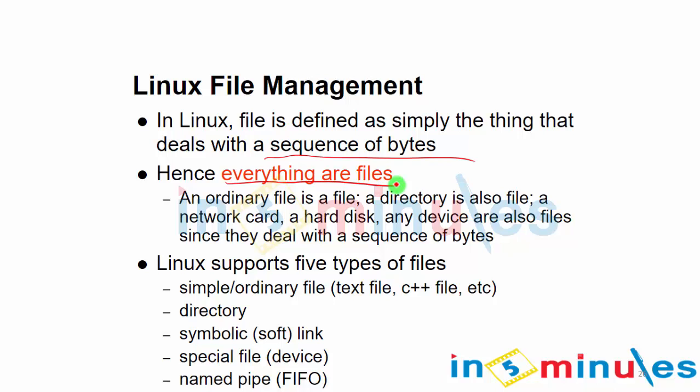The five file types are: simple or ordinary files, which are text or script files; directories, which contain various files and subdirectories; symbolic links or soft links, which refer to a remote location; special files, which represent devices; and named pipes, used for FIFO (First In, First Out) data transfer over the network.